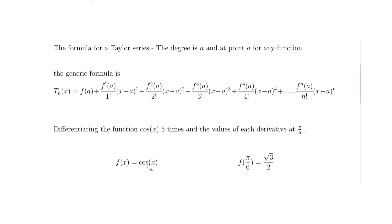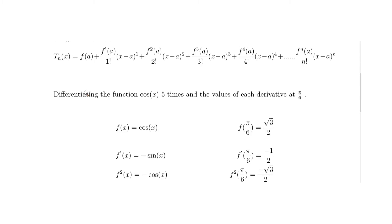f(x) = cos(x), and its value at pi/6 is root 3 over 2, so f(pi/6) = √3/2. The first derivative of cosine is negative sine, and the value of negative sine at pi/6 is minus a half, since sin(pi/6) = 1/2. The second derivative is minus cosine, and minus cosine at pi/6 gives minus root 3 over 2.